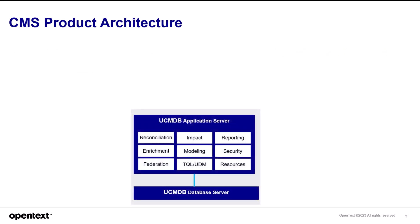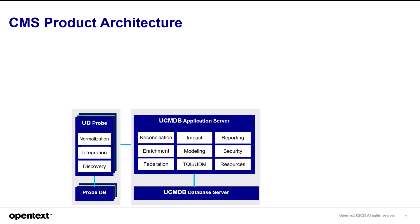Let's take a look at the CMS architecture. The UCMDB application server itself contains all the logic for the components listed — for example, reconciliation, enrichment, modeling, security, and reporting. UD probes, or Universal Discovery probes, or Dataflow probes, are the means by which data comes into UCMDB most of the time. Probes are responsible for normalization rules and running integrations and discoveries.